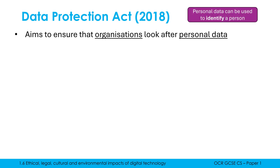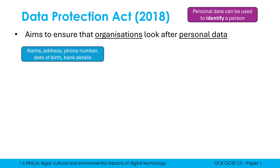Personal data is data that can be used to identify a person. For example, if your exam results were leaked but it was just a bunch of numbers with no name attached, that wouldn't be personal data. But if it was leaked alongside your name, then it would become personal data because you can be identified. Examples of personal data include name, address, and phone number — all covered by this law.